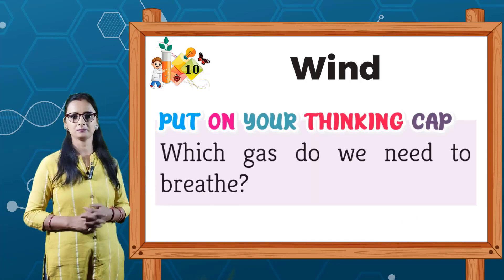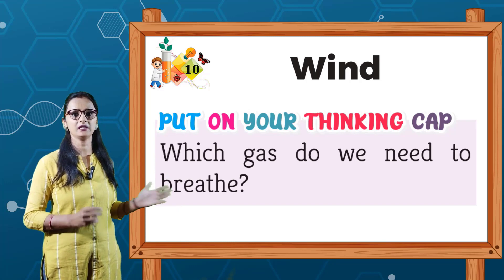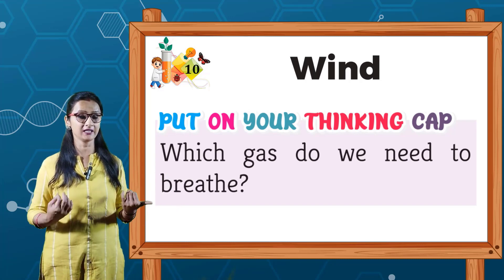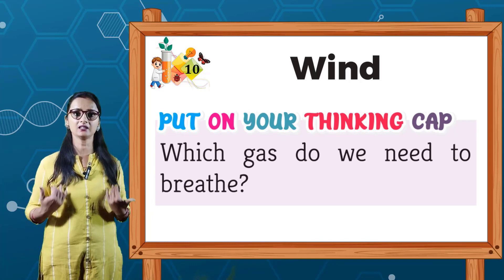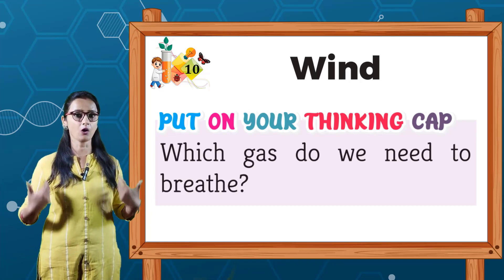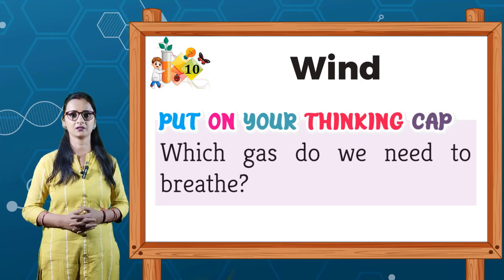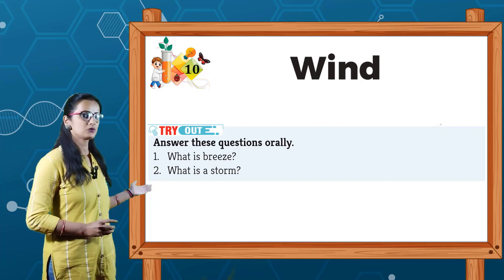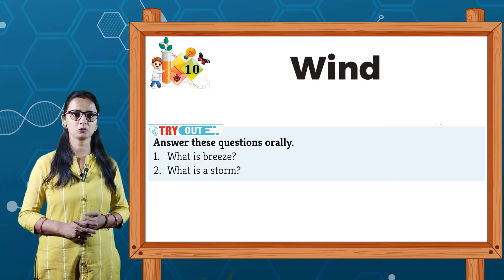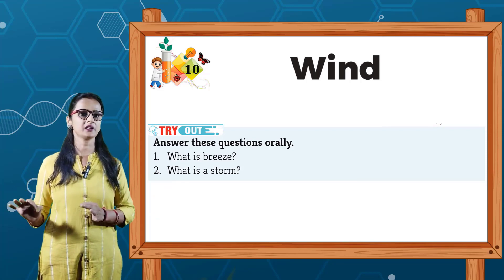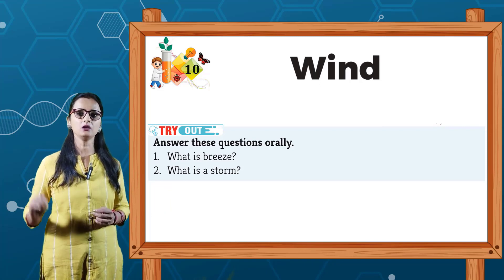Now, put on your thinking cap. Which gas do we need to breathe? Hame kaun si gas chahiye breathe ke liye? Jab hum breathe in karte hain to kaun si gas lete hain? Oxygen. Aur jab hum breathe out karte hain to kaun si gas nikalti hai? Carbon dioxide. Now, try out — answer these questions orally. What is breeze? Slow moving air is called breeze. And what is storm? Very fast moving air is called storm.